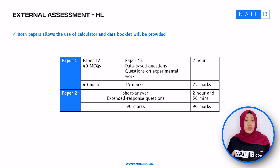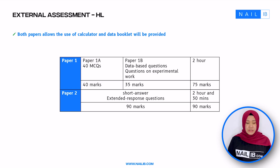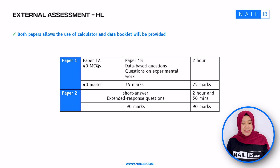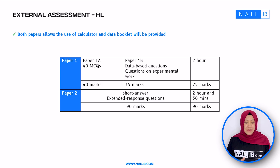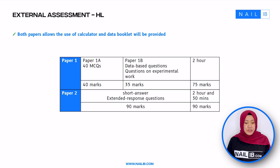As mentioned before, the difference is only the number of questions and the time needed to complete both paper one and two. For higher level, paper 1A has 40 MCQs, and the entire paper has 70 marks, where paper 1B has 35 marks. You should complete this paper within two hours. For paper two, it has 90 marks and the time to complete is two hours and 30 minutes.